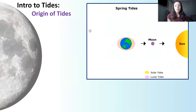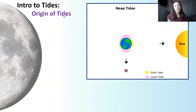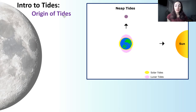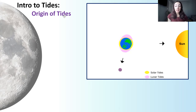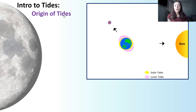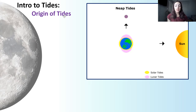Now we'll get into a little bit about the origin of tides. In this animation, we can see the sun, the earth, and the moon, with the moon rotating around earth. The moon's gravitational pull pulls on the oceans on earth, causing what's called a tidal bulge, shown here in pink. The bulge caused by the sun's gravitational pull on earth is shown in yellow. Because the moon is much closer to earth, the moon's gravitational effect and the bulge it causes on earth is larger than the sun's effect.